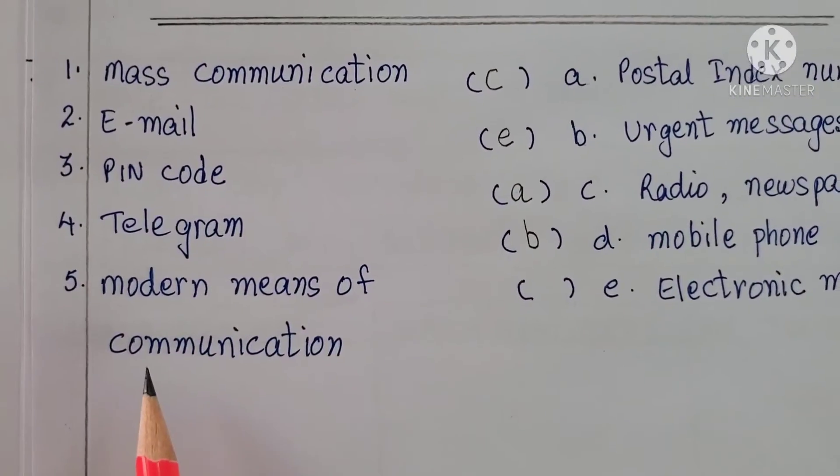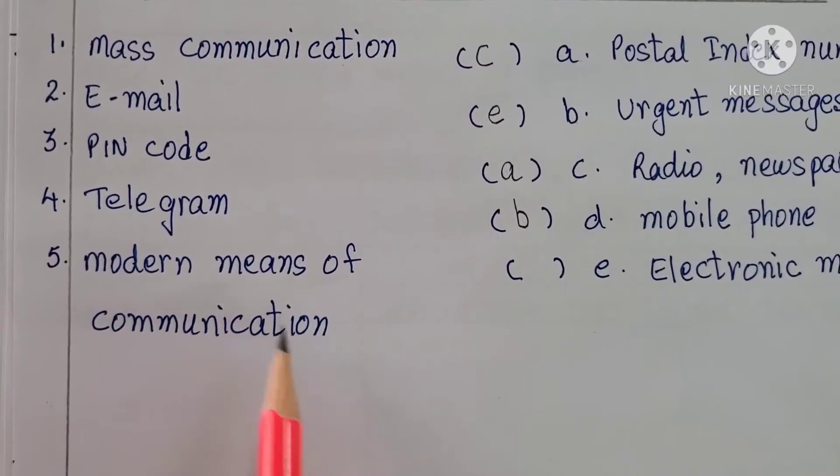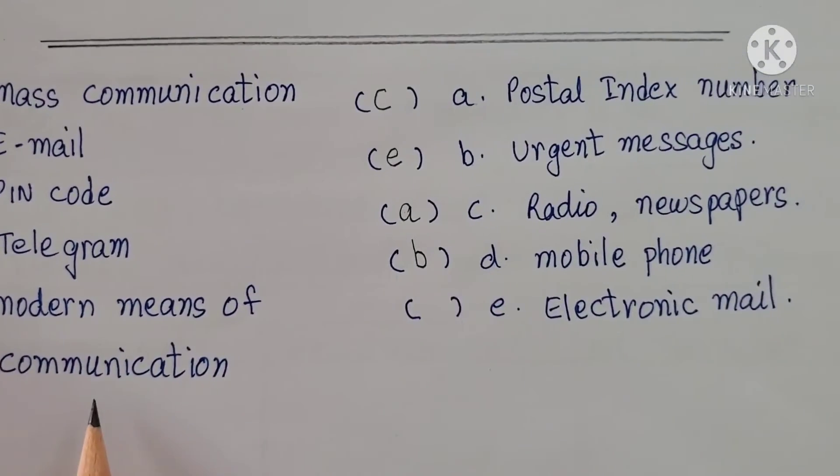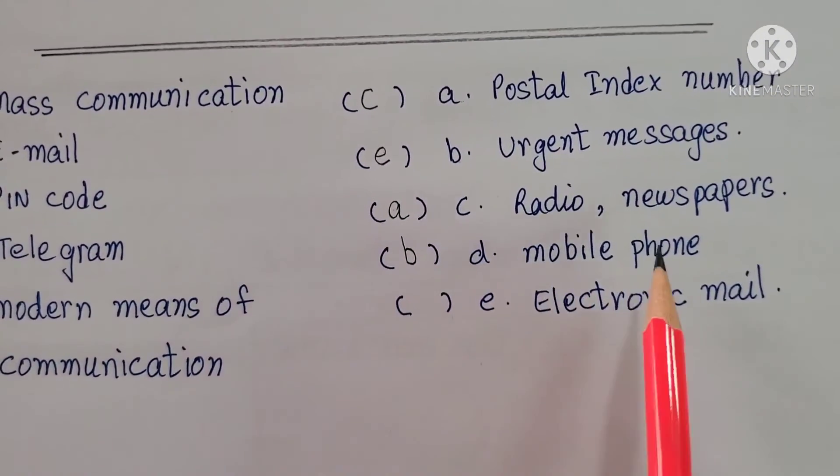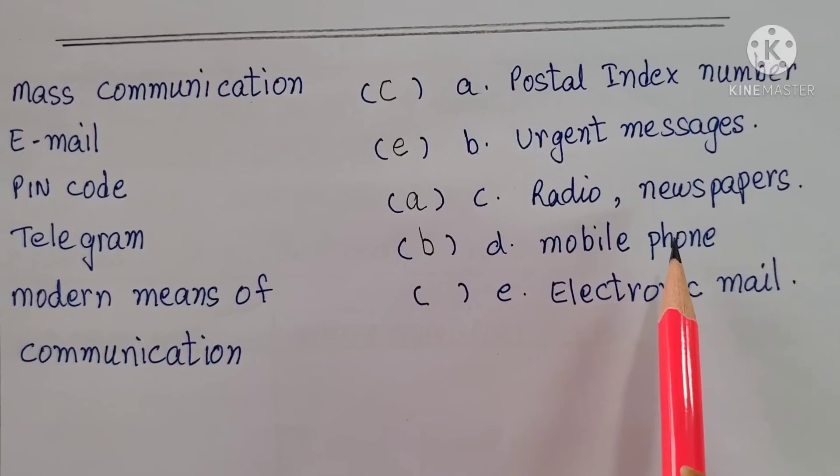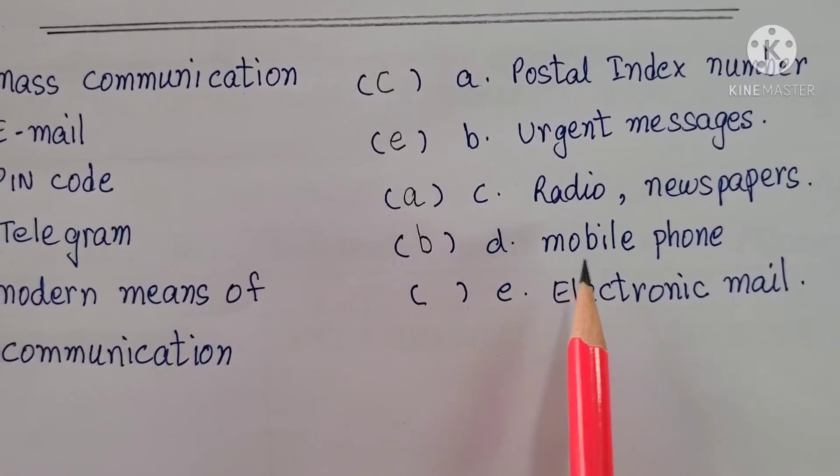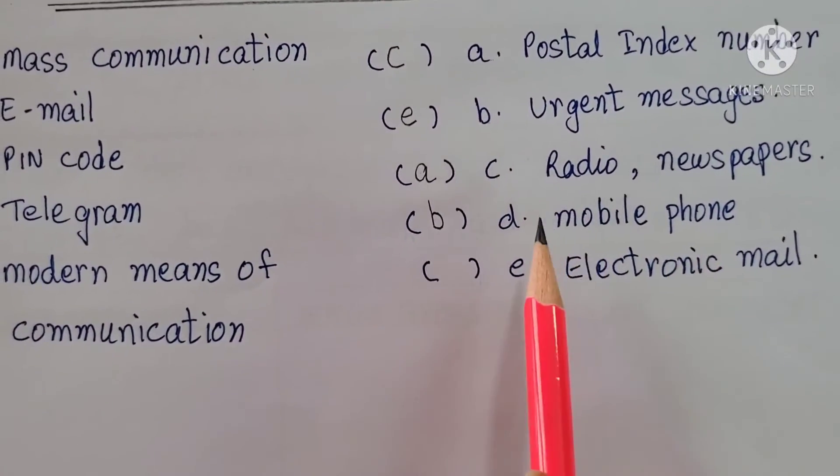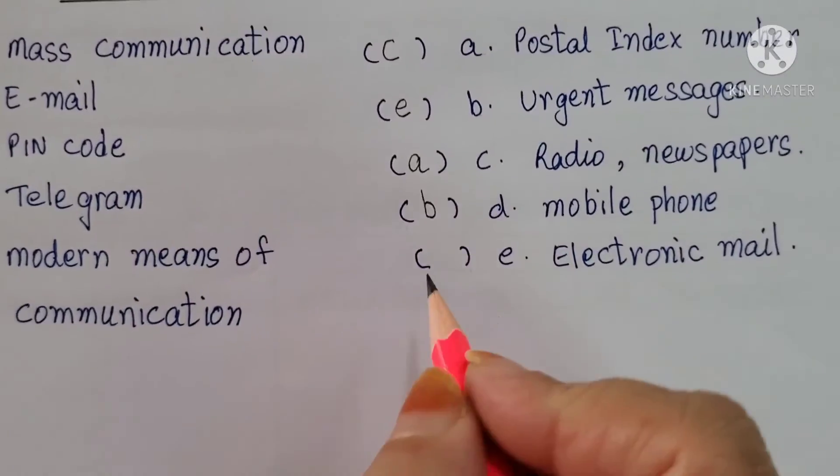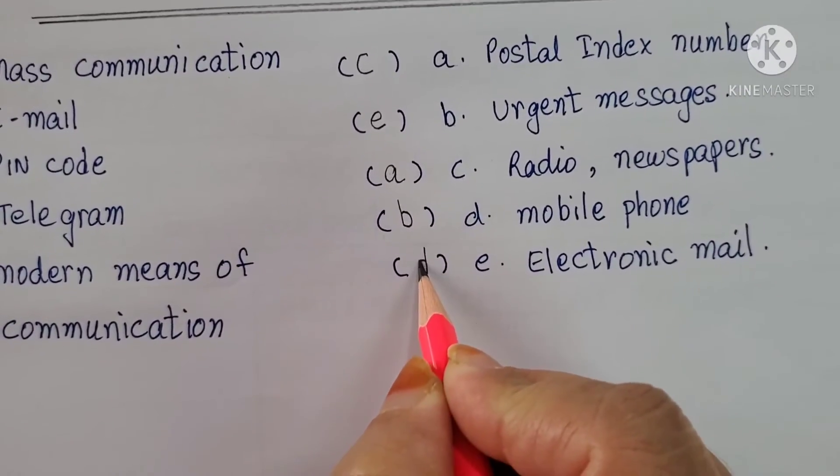Last one. Modern means of communication. What is modern means of communication? Mobile phone. So this is matching with mobile phone. And which alphabet is here? D. You need to write here D.